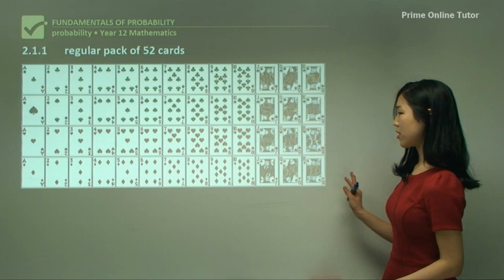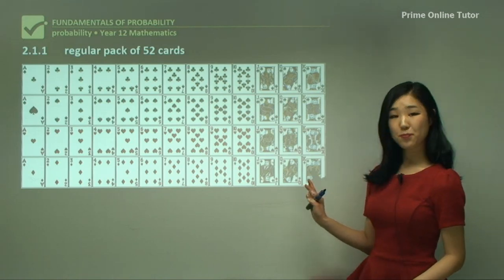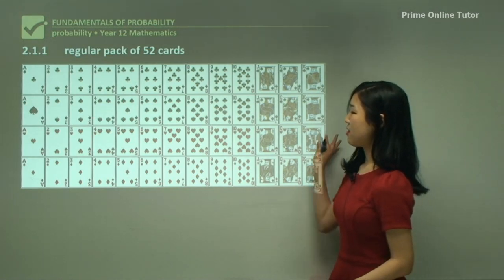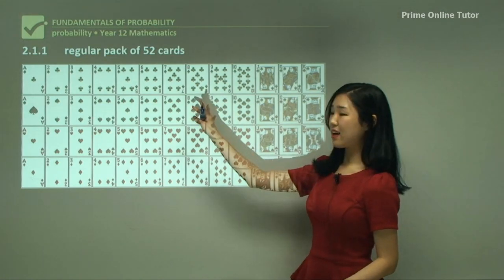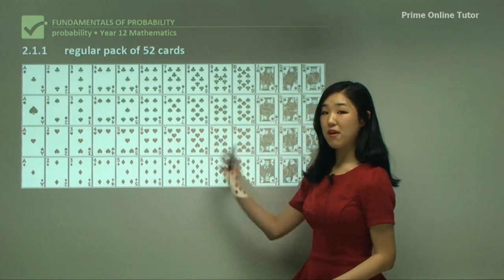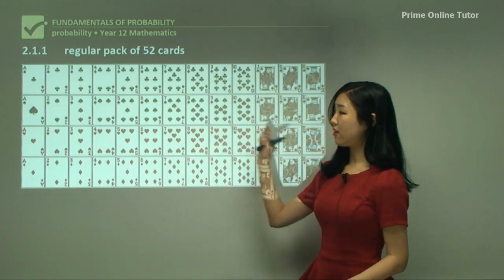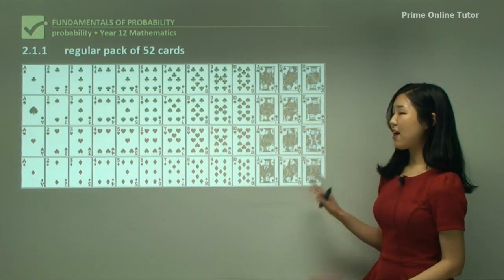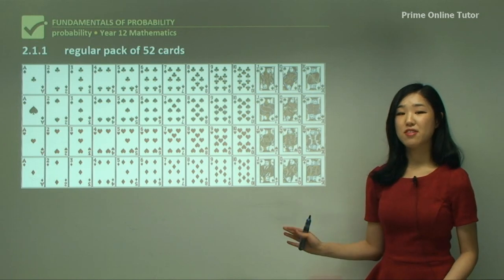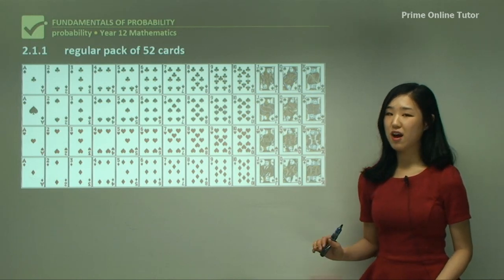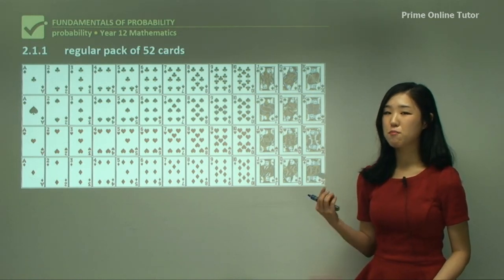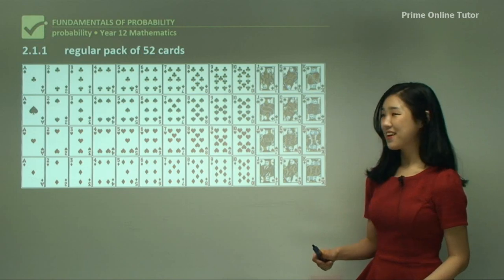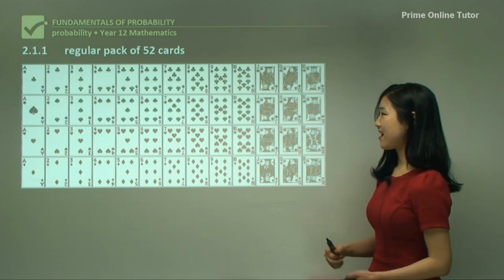You should also know that there are black cards and red cards. If you count them all up, you can see that there are 52 cards in total, so you must remember that number — 52.